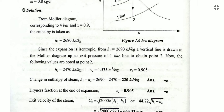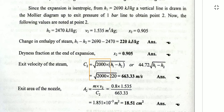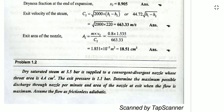Using the values H1 and H2 from the Mollier diagram, we substitute into the exit velocity formula C2 = 44.72√(H1 − H2) to find the exit velocity. For the exit nozzle area, we use the mass flow rate formula ṁ = (A₂ × C2) / V2, substituting known values to obtain the exit area A2.